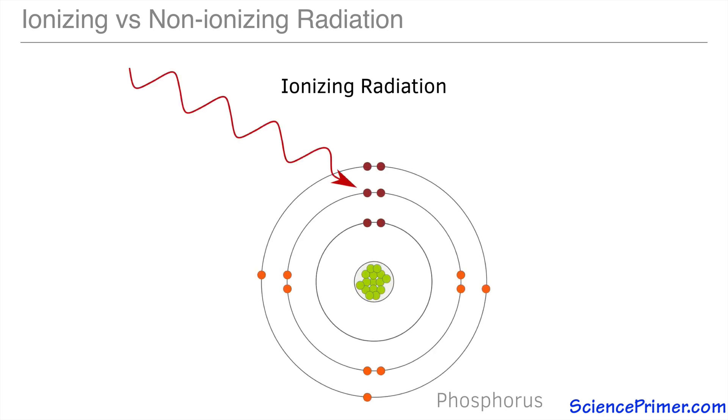Ionizing radiation carries enough energy that when an electron absorbs the energy, that electron is ripped from its orbital, completely separating it from the atom, thereby ionizing the atom.